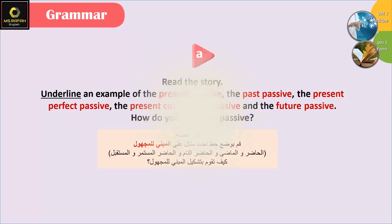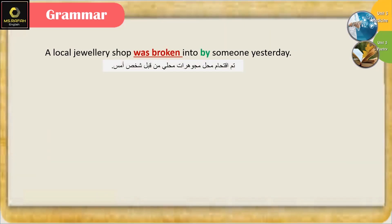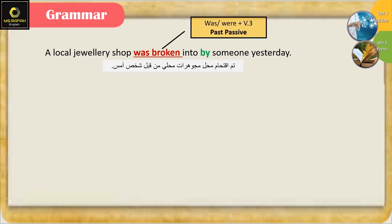Let's see. 'A local jewelry shop was broken into by someone yesterday.' كلمة 'by' بدل على أن الجملة مبني للمجهول. الفعل 'was broken' — was زائد الفعل بالتصريف الثالث — معناها هو past passive، ماضي مبني للمجهول.